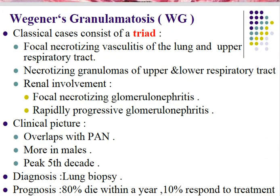Wegener's granulomatosis is characterized by a classical triad of three pathognomonic features. The first is focal necrotizing vasculitis of the upper and lower respiratory tract. The third is renal involvement, including focal necrotizing glomerulonephritis and rapidly progressive glomerulonephritis. Absence of any one of these three traits means the condition cannot be diagnosed as Wegener's granulomatosis.